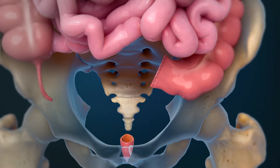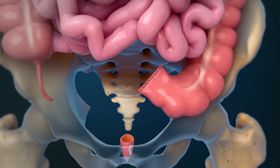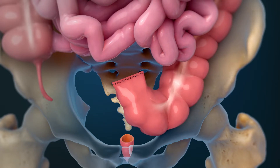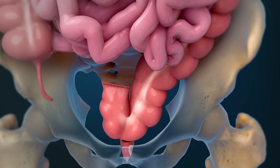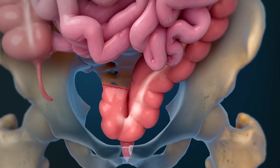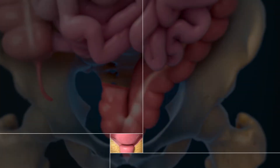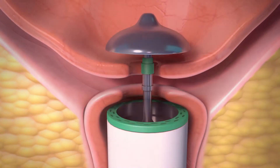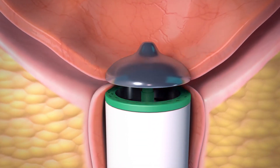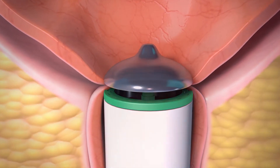Next, your surgeon will create a pouch at the end of your colon. The pouch will function like a rectum because it will store feces. This pouch will be attached to your anal canal.